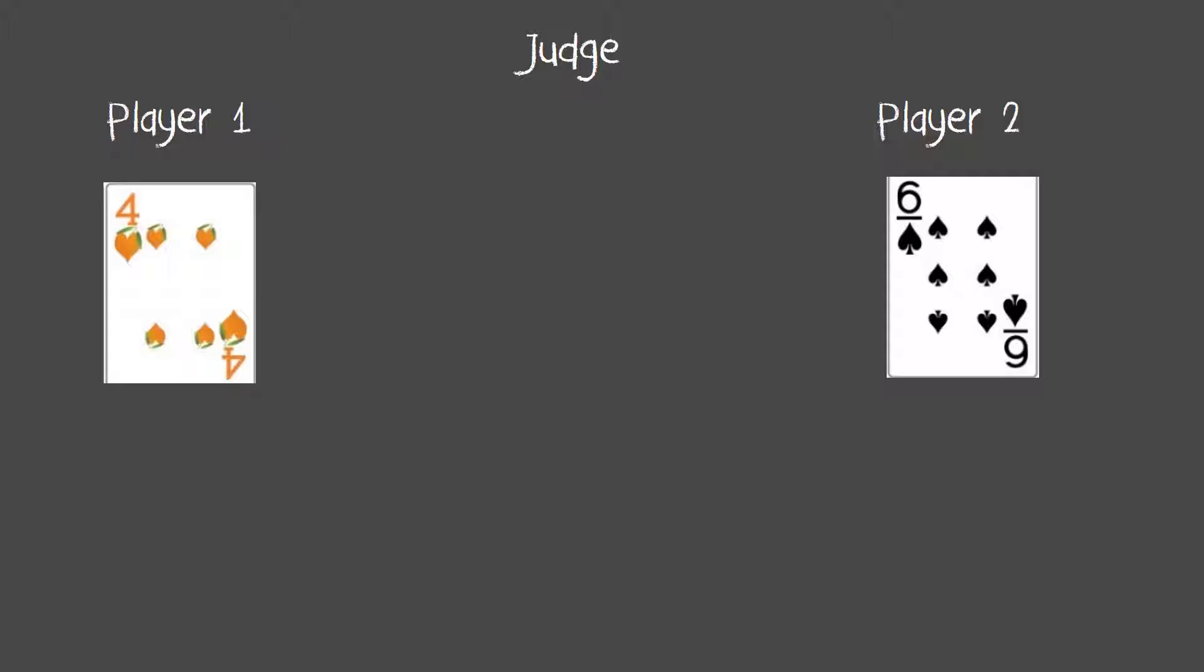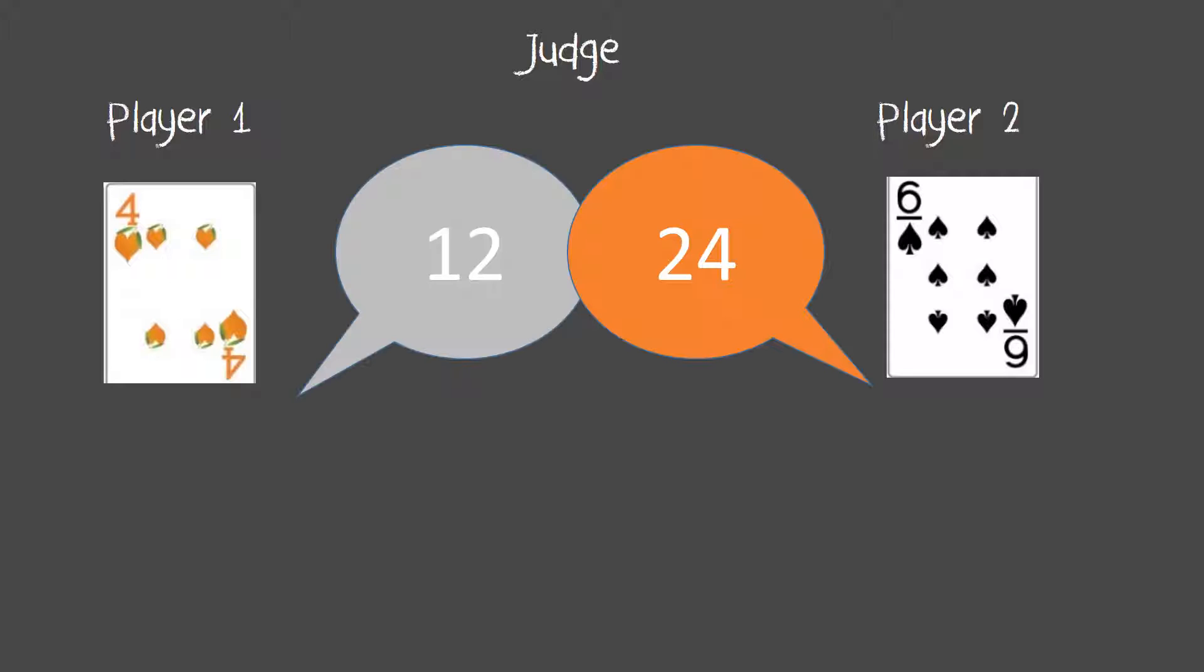They will say it as soon as they know it, they'll say it aloud. So in this case one player says 12 and one player says 24. It is then up to the judge to determine who is correct. And the correct one in this one would be 12 because 4 can go into 12 and 6 can go into 12. So it's the least common multiple of each of those numbers.